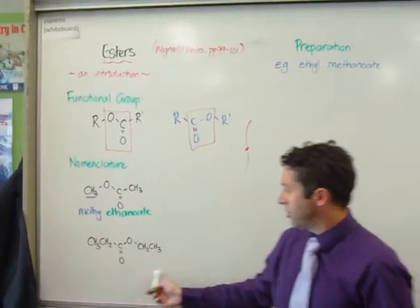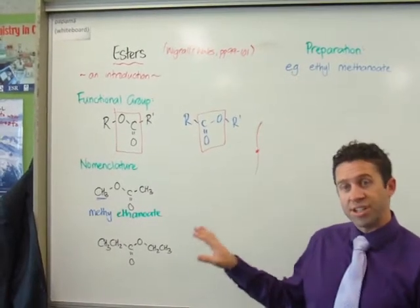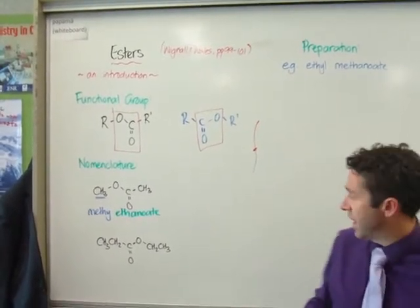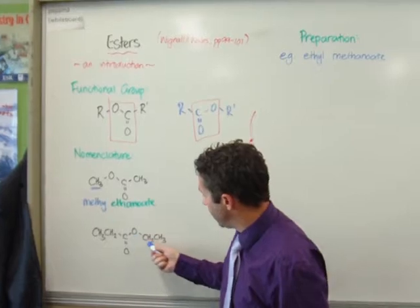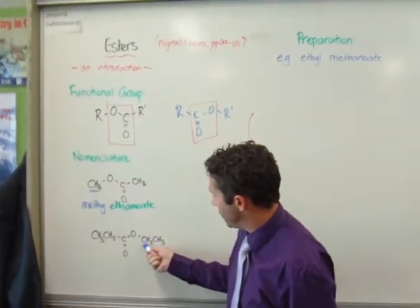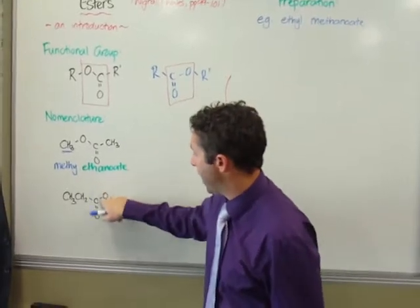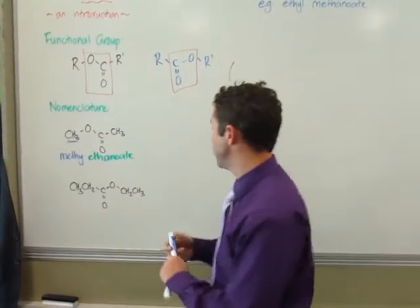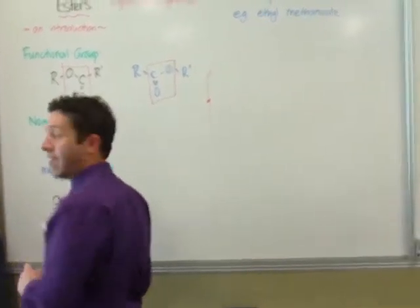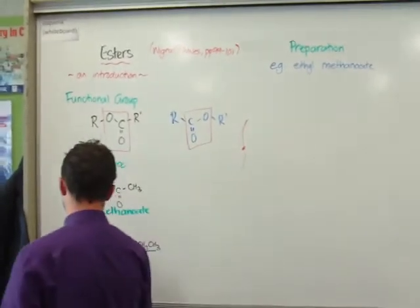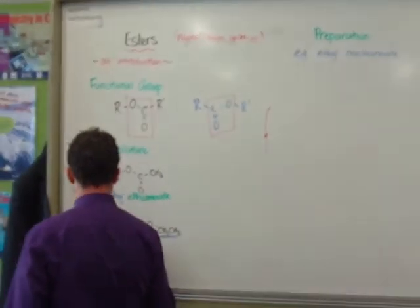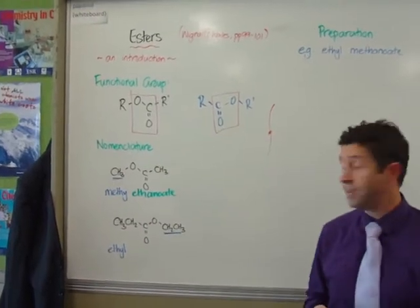You'll see in this one here. I'm throwing you a bit of a curve ball. It's not written out the same way. We've got the CH2CH3 bound to the oxygen on the right hand side. So this is the part that came from the alcohol. So in this case, it'll be ethyl. Ethyl because it's got two carbons.